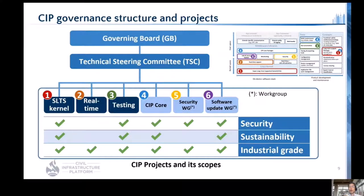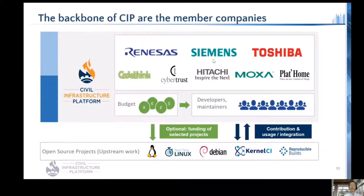There are three other activities: the CIP core team, security working group, and software update working group. The CIP core team works on CIP core packages. The security working group works on cybersecurity standard conformance with IEC 62443. The software update working group is initiating a prototype of software update mechanisms for CIP. Currently there are eight member companies in CIP actively working on these activities.